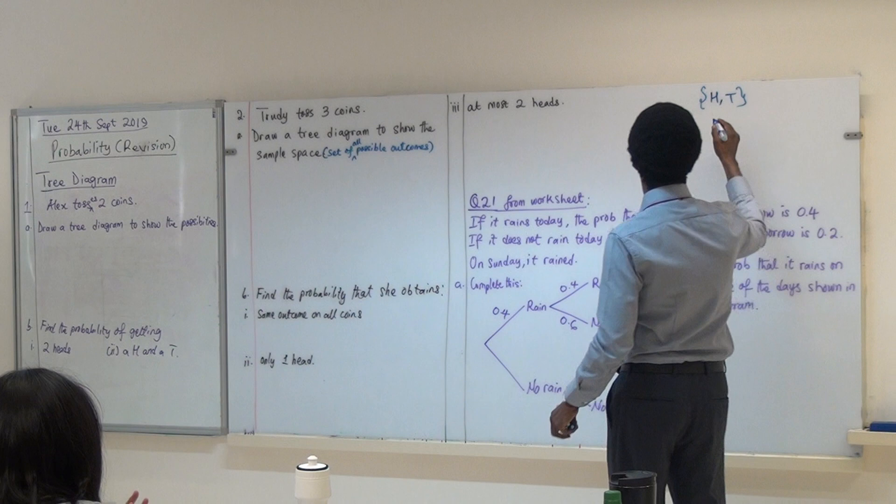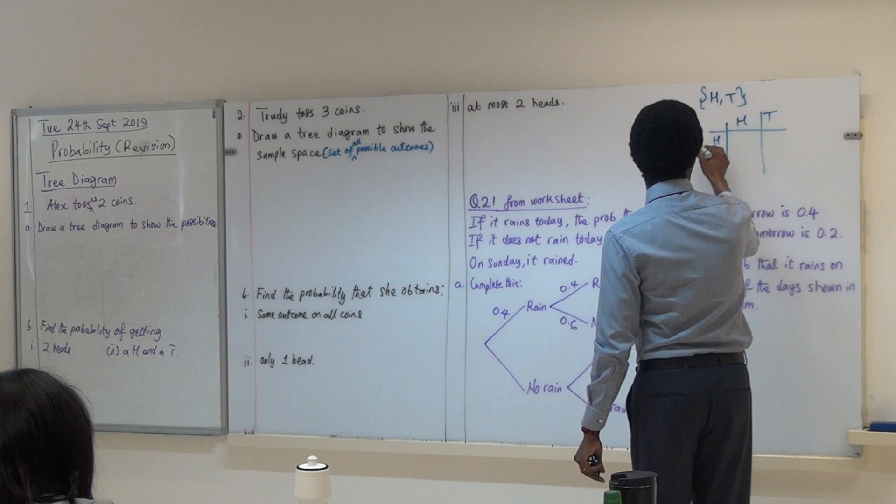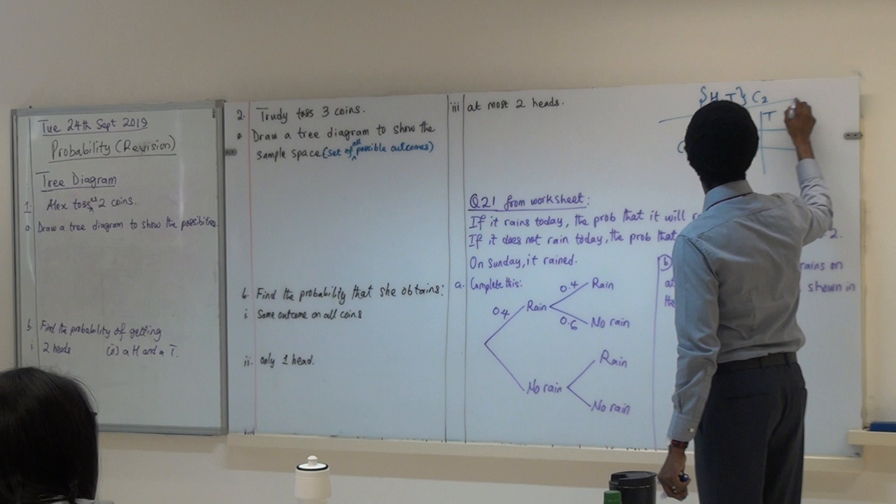Now, so for one coin this is what you have. For two coins, there are ways you can do it. You have a way of dealing with the table. If I use the tabular approach, I could have head, tail, and head, tail. Like the length table. Well, this is coin number one, and this is coin number two.